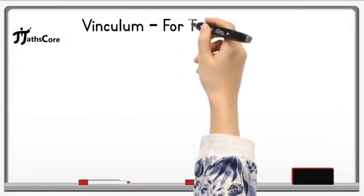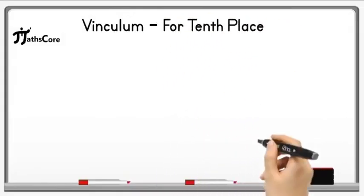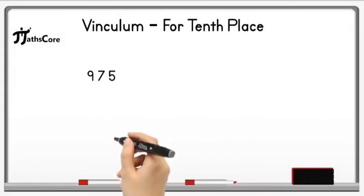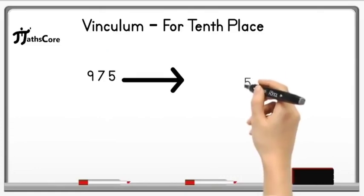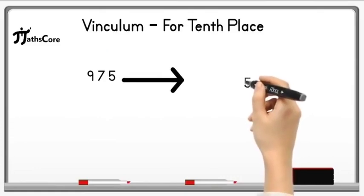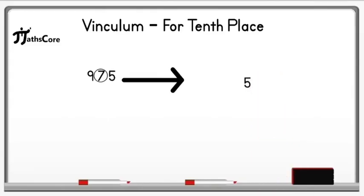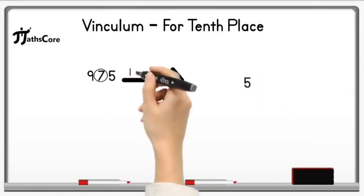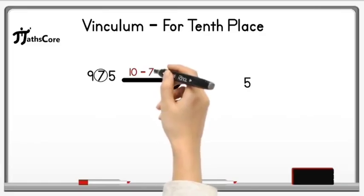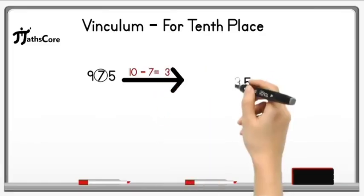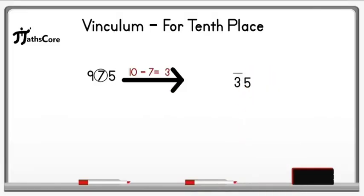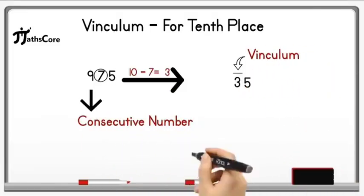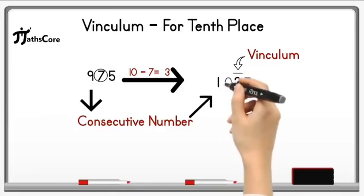Let's take one more example on vinculum for the tens place. The example is 975. Write down the unit place digit 5 as it is, then subtract the tens place digit 7 from 10. 10 minus 7 equals 3. Write 3 before 5 and place an overline on 3, which is vinculum. The consecutive number of 9 is 10, so write 10 before 3.